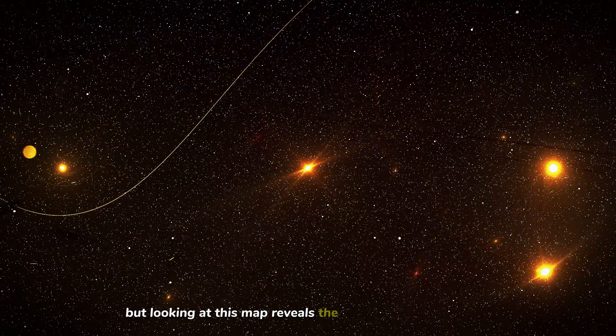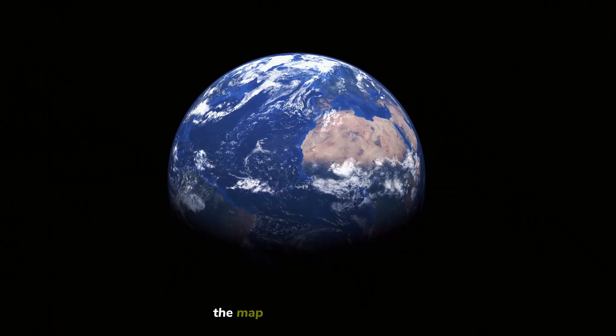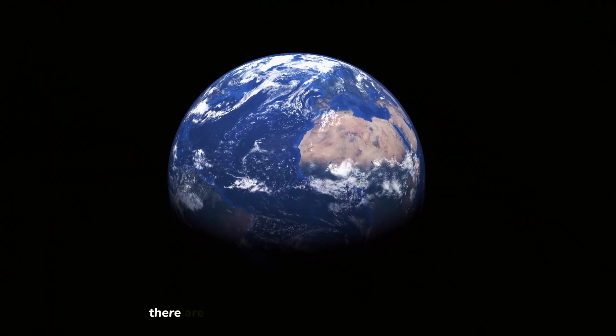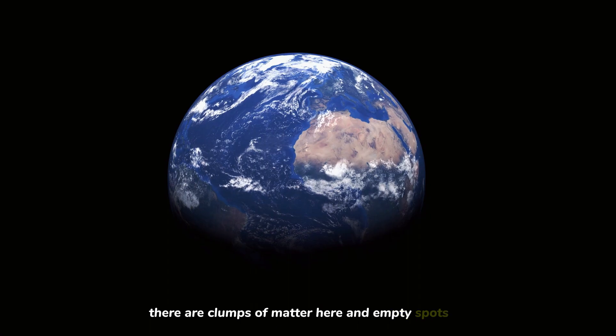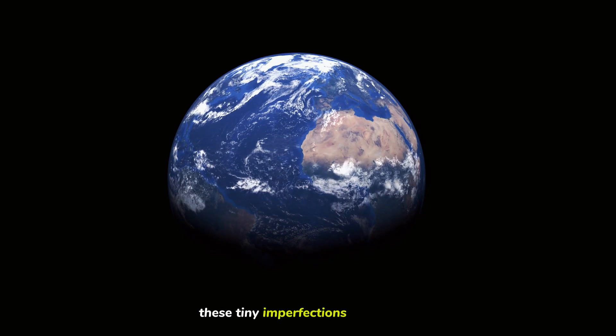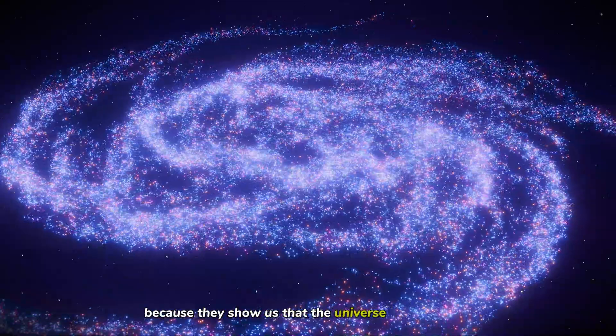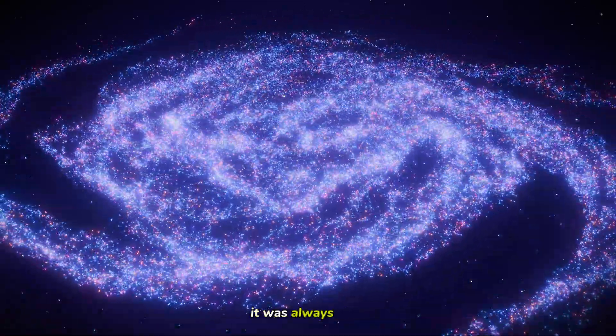But looking at this map reveals the second clue to our paradox. The map isn't smooth. It's splotchy. There are clumps of matter here and empty spots there. These tiny imperfections are important because they show us that the universe was never static. It was always moving.